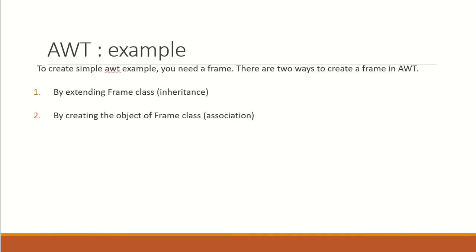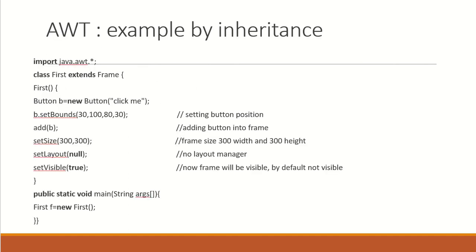Let's see a quick example. As I said, we are using frames generally for AWT. When you are going to use the frame, you will have to put a hand on the frame class. There are two methods to associate a frame into your class: one is the inheritance method - you can extend the frame class - or you can associate with the frame class object. Let's start with the example using inheritance to utilize the frame.